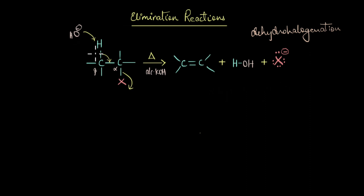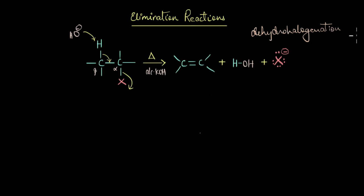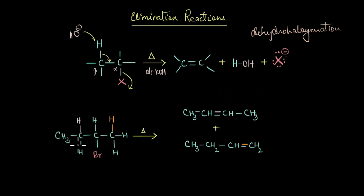Another name for this reaction is dehydrohalogenation. From the name itself, you can see that we are eliminating a hydrogen atom as well as a halogen atom, and that is why this elimination reaction is also called a dehydrohalogenation reaction. Now that you understand the framework of this reaction, let's quickly look at an example.